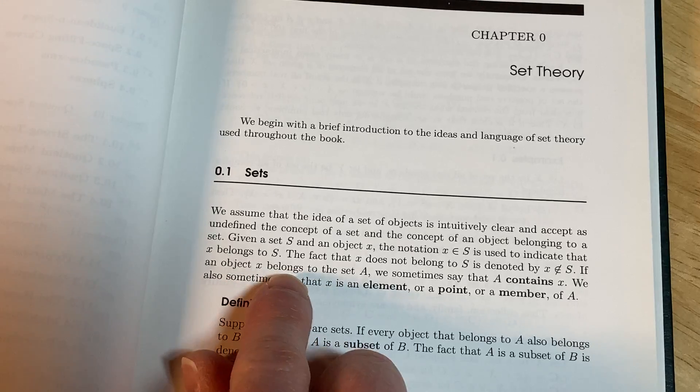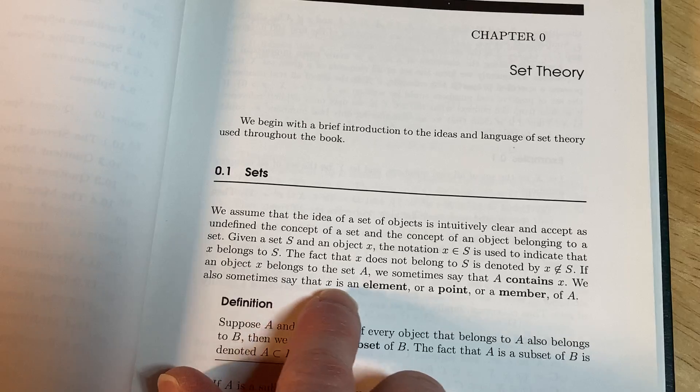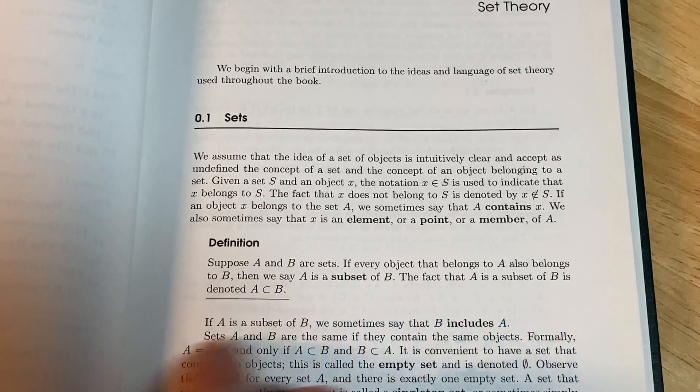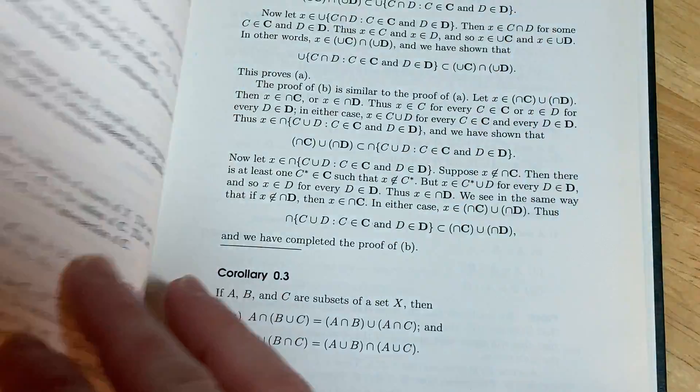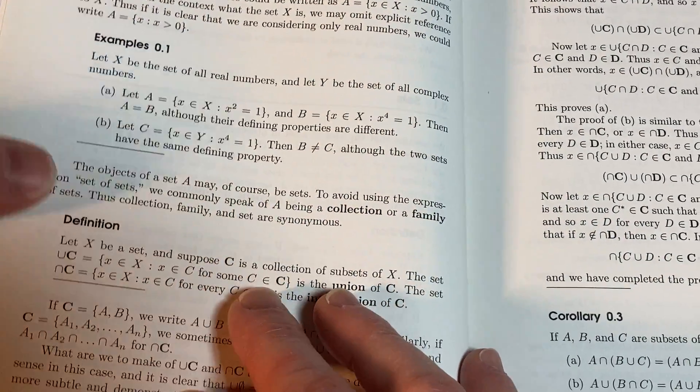If an object X belongs to the set A, we sometimes say that A contains X. We also sometimes say that X is an element or a point or a member of A. And then it goes on and defines some other things here. It's got some examples here with sets and some definitions.